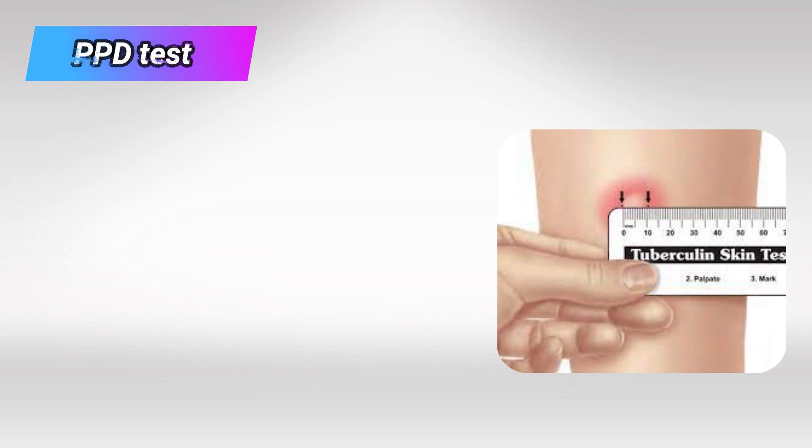The second test we have is the PPD skin test. Basically, we'll inject some dead bacteria and their proteins immediately beneath the skin, and we'll wait for two days. There will be some inflammation and activity, and there will be some level of erythema and induration, which is basically raised skin.